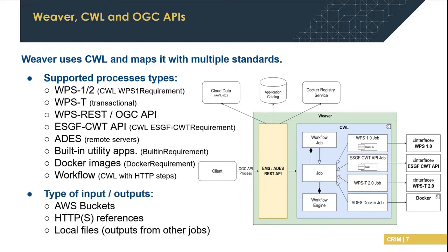Weaver also provides different types of input and output mapping, whether the data is located over AWS buckets, HTTP references, or local files from previous jobs. As shown in the figure, Weaver provides the communication and translation between different API connectors. With the custom requirements it provides, it can execute different jobs using the CWL engine, applying the required interface based on that requirement, and then executing the process with the appropriate HTTP requests to the remote API or Docker images.